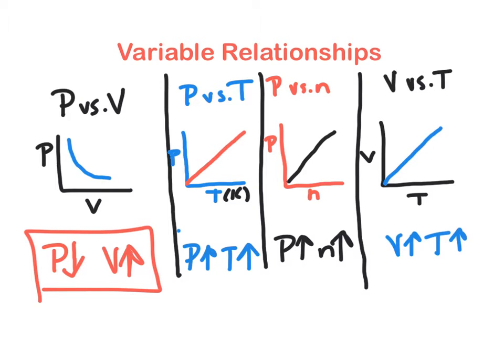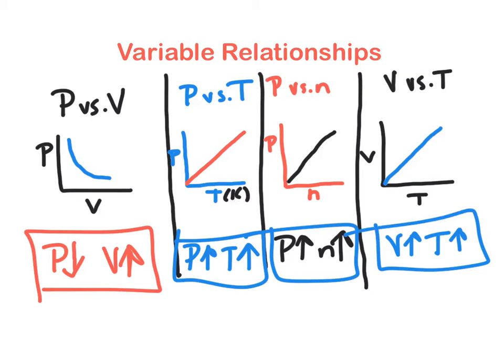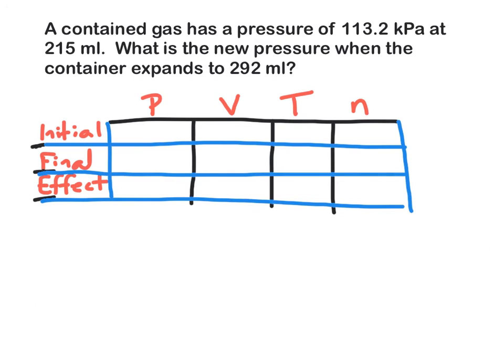We need to make sure that we know each one of these here because these are vitally important in order to get our calculations set up right. So here's a typical problem that we might have. It's a contained gas that has a pressure of 113.2 kilopascals at 215 milliliters. What's the new pressure when the container expands to 292 milliliters? So we write down what we know in here. Kilopascals is a unit of pressure, and that's what we start out with. So I'm going to write 113.2 kPa in here.